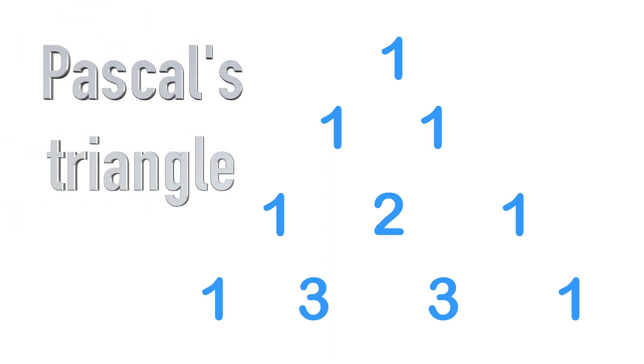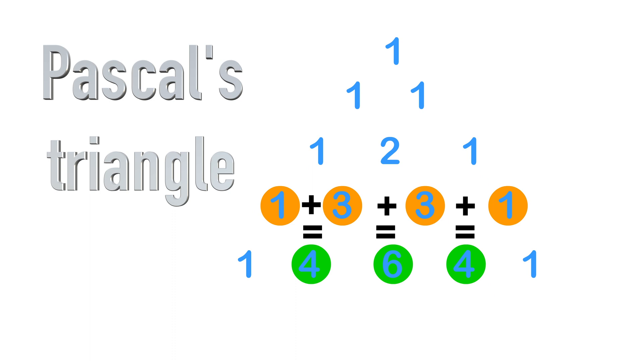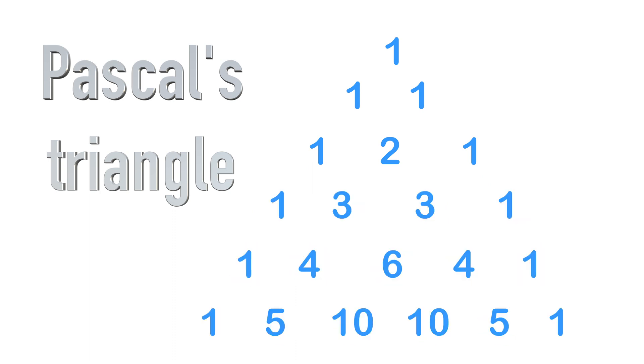This is commonly known as Pascal's triangle. As we go down the triangle, the sum of the top two entries is placed in the middle below. We can keep on expanding Pascal's triangle in a predictable pattern.